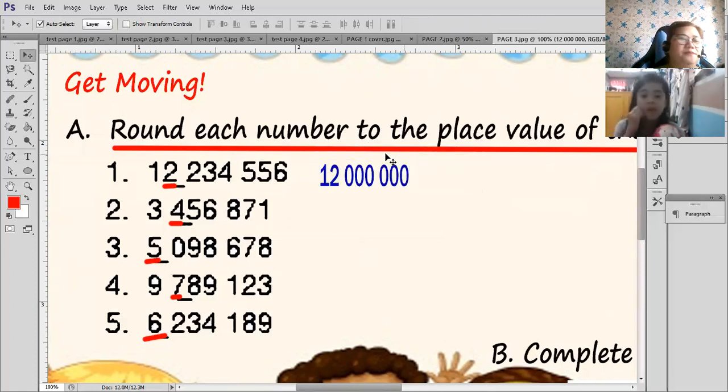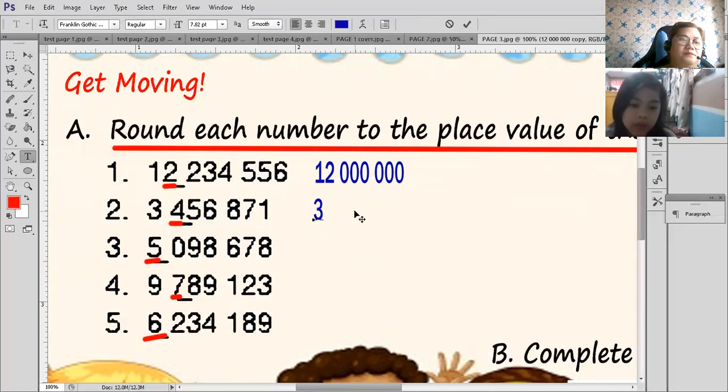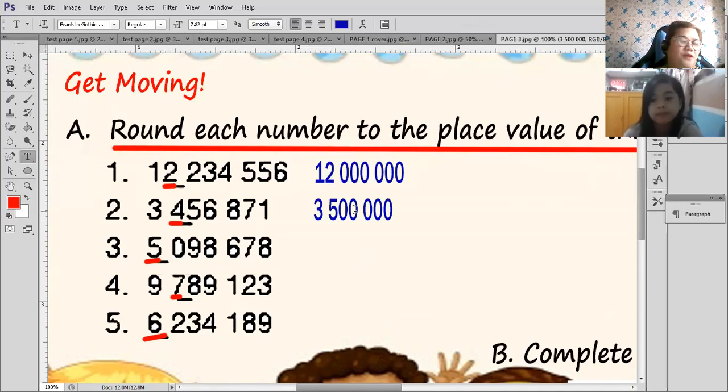How about number two? Okay. Three million five hundred. Three million five hundred? Are you sure of that? One thousand. Again, what's your final answer? Three million five hundred thousand. Okay, very good. Kasi pag sinabi mong 3,500,000, ganito yun, no? 3,500,000, yan yun. So your answer is 3,500,000, tama? Okay, sige, very good.